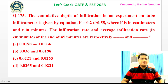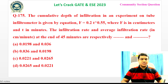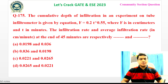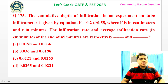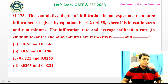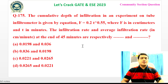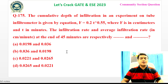Welcome to the RM classroom. The question states: the cumulative depth of infiltration in an experiment on a tube infiltrometer is given by the equation F = 0.2 × T^0.55, where F is in centimeters and T is in minutes. We need to find the infiltration rate and average infiltration rate in cm/min at the end of 45 minutes.